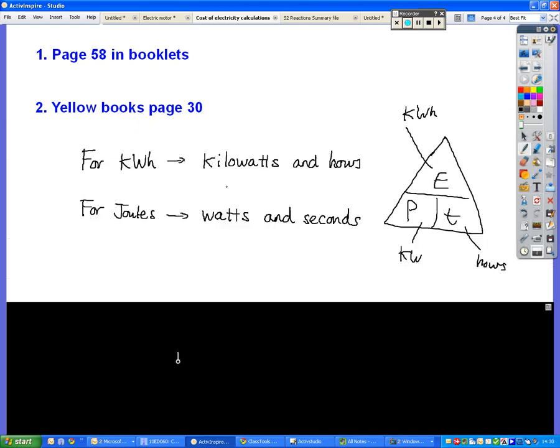So what we're really looking at is that if you're trying to calculate how many kilowatt hours, you must have kilowatts and you must have hours. That's where the kilowatt hours comes from. If you're looking for joules, that's when we go back to our previous equation of energy equals power times time. We use watts and we use seconds. But they both really use the same equation.